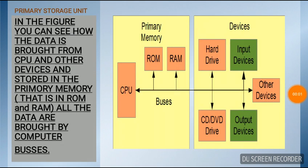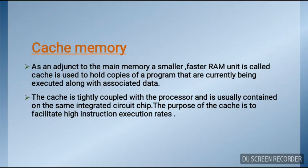Let's look at the figure of the primary memory unit. In the figure, you can see how data is brought from the CPU and other devices and stored in primary memory — that is, in ROM and RAM. All the data is brought by computer buses.